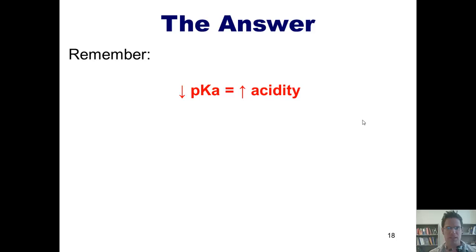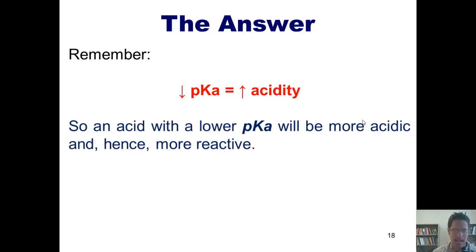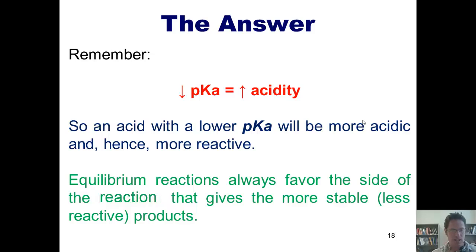Well, if you don't, here's a little song. If pKa is low, acidity is mo, mo. Now it helps if you put the oo at the end, because it really solidifies that in your brain. Now, keeping this fact in mind, you should realize that an acid with a lower pKa will be more acidic and hence more reactive. Here's one more detail you should remember. Excluding any external intervention, equilibrium reactions generally always favor the side of the reaction that gives the more stable slash less reactive stuff.